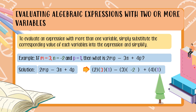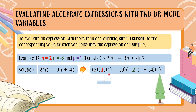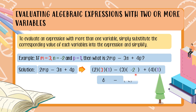No groupings visible, no exponents, so let us proceed to multiplication and division. No division, so we just multiply everything that can be multiplied. We have 2 times 3 times 1, which equals 6. Bring down the minus sign. Next, 3 times negative 2 is negative 6. Bring down plus. 4 times 1 is 4.